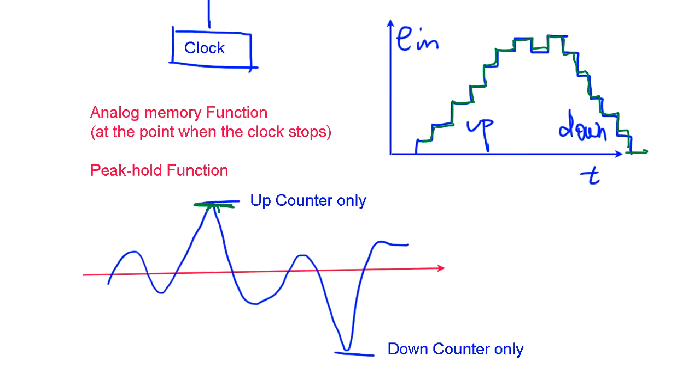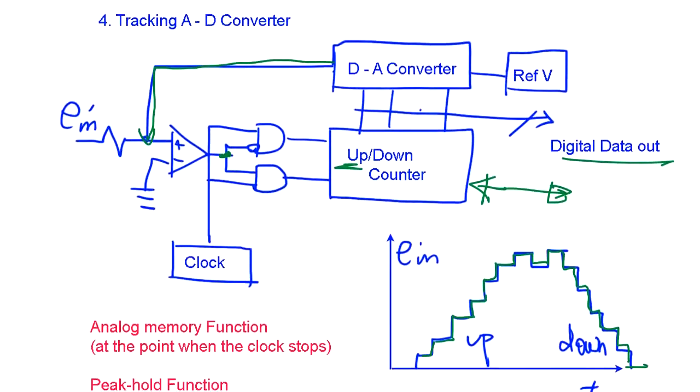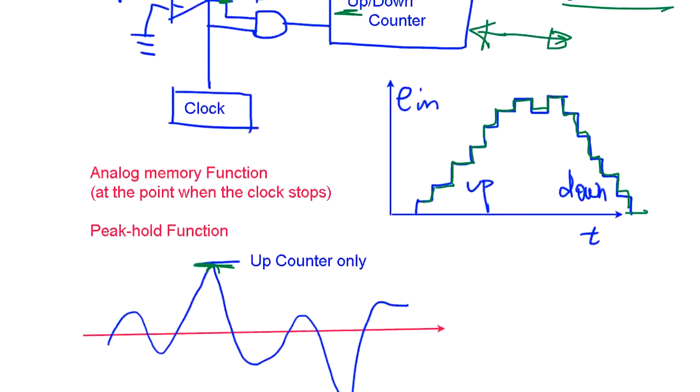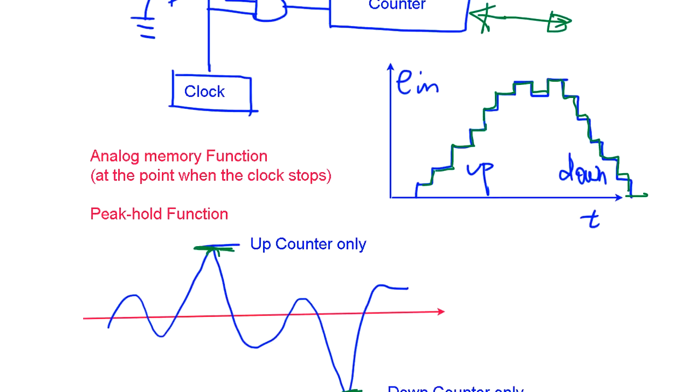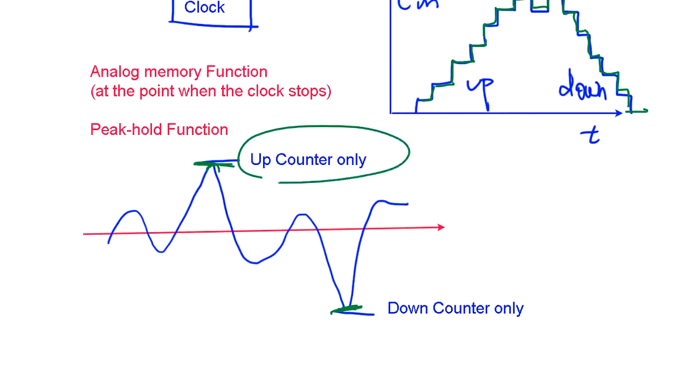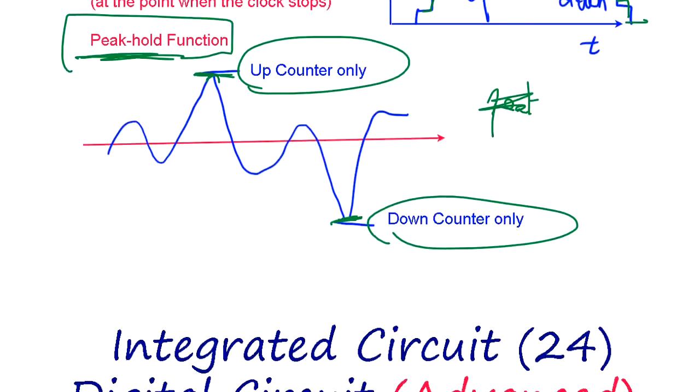The same way, if we set only down counter, we can capture the lowest signal in the analog input. So this is another application of AD converter. Combining both together we can get the data also, but the great thing about this is we can get peak hold function.